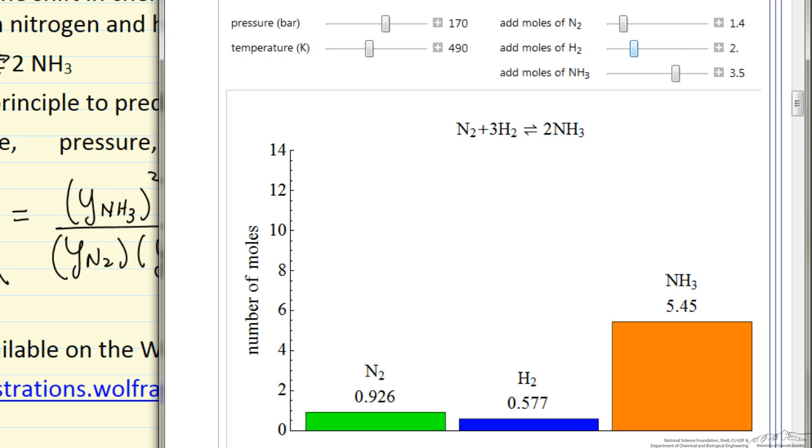So Le Chatelier's principle predicts the behavior that we see, and the actual calculations allow us to get these numbers. We can use this simulation to quickly visualize the behavior that we expect to see.